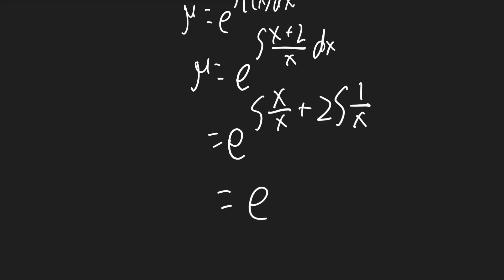So it'll be e to the power of... The first integral is just 1 dx, which will become x. And the other one will become 2 ln x. So it'll be x plus 2 ln x.